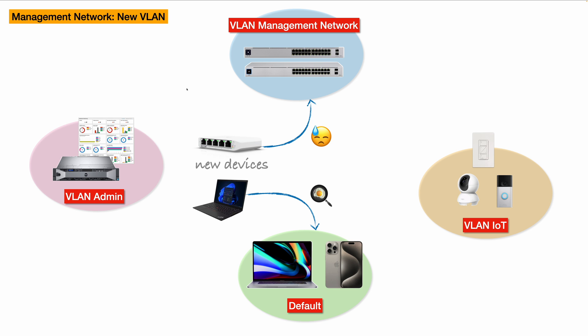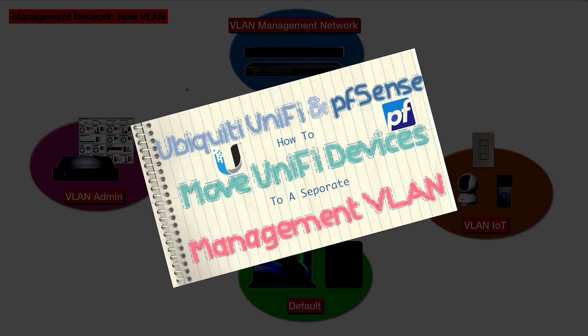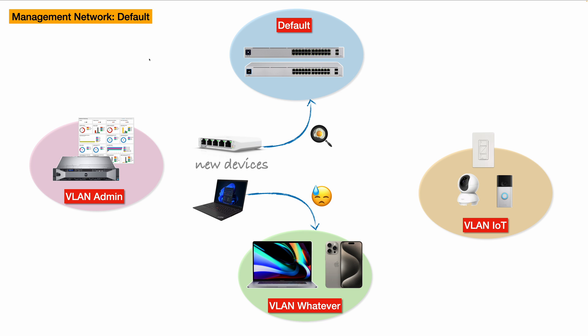If you're interested, I have a video posted earlier talking about how to introduce such a new management network and add your existing devices. The second approach — which may be the one you want to implement, even though it doesn't sound very reasonable at first — is: by default, if you do nothing, your new UniFi devices will join the default network. So let's keep it that way: use the default network as the dedicated UniFi management VLAN. For all other devices, put them in separate VLANs — for example, Admin VLAN and IoT VLAN remain unchanged, but create a new VLAN for your regular devices.